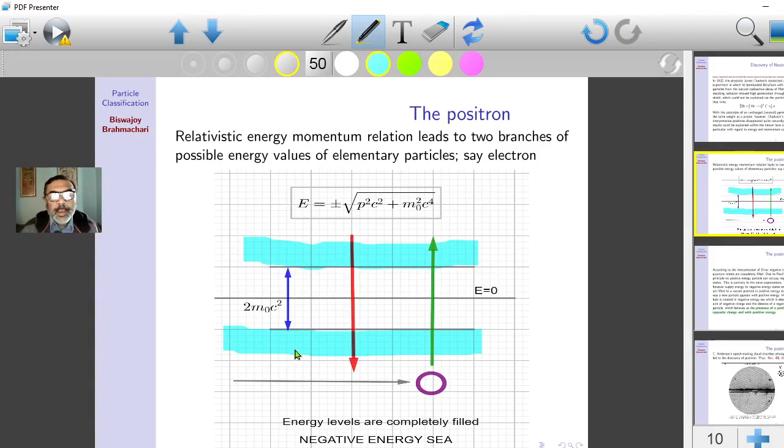The negative energy band is completely filled. If you have a particle with positive energy somewhere here, there is no way it can come to the negative energy states by emitting radiation. We know usually particles will emit radiation and then their energy will be reduced.